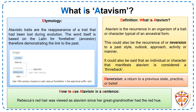Just so that you're clear on how to use atavism in a sentence, take a look at the example on your screen: Rebecca's red hair was viewed as atavism since her great grandmother had the red hue. Why not pause the video and see if you can write a sentence using the term accurately. You could write about Mr. Hyde or write a sentence of your own. Good luck.